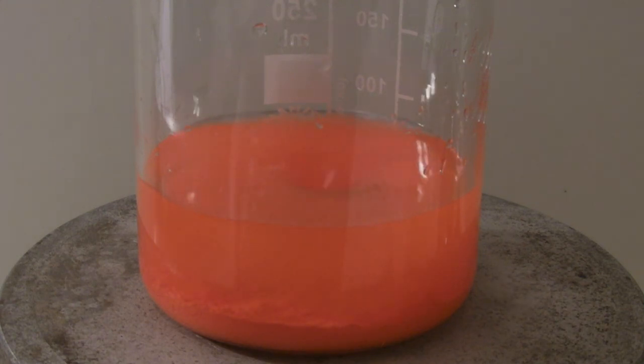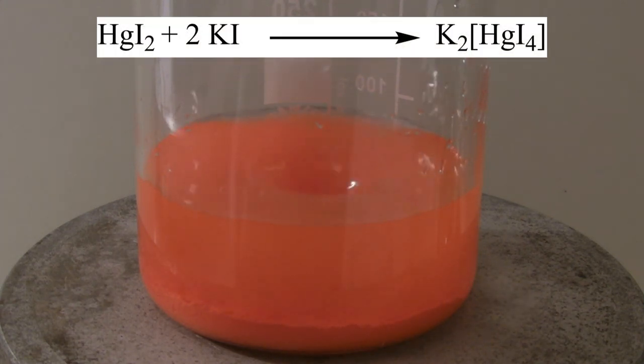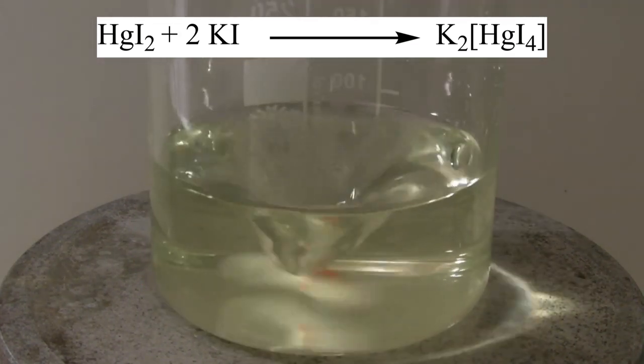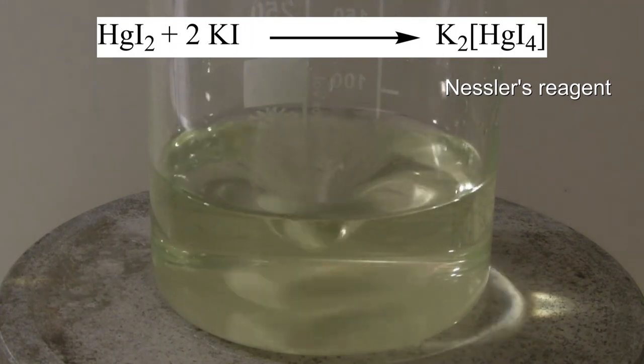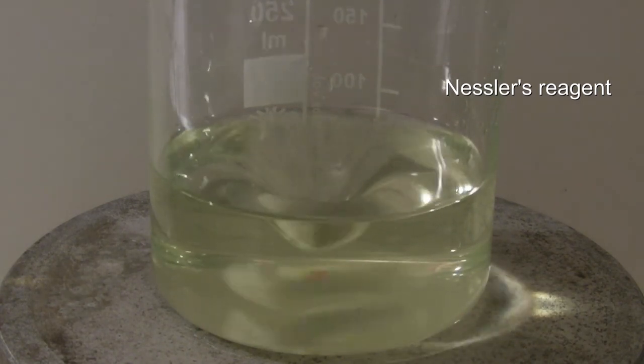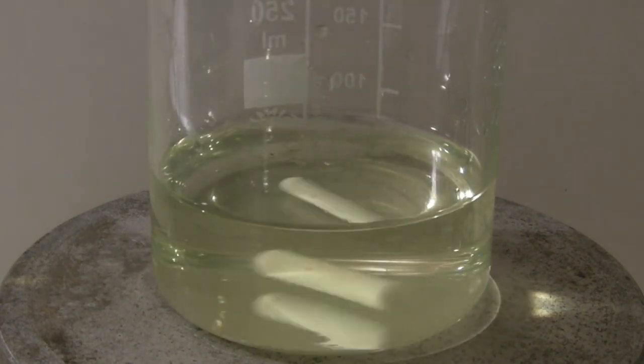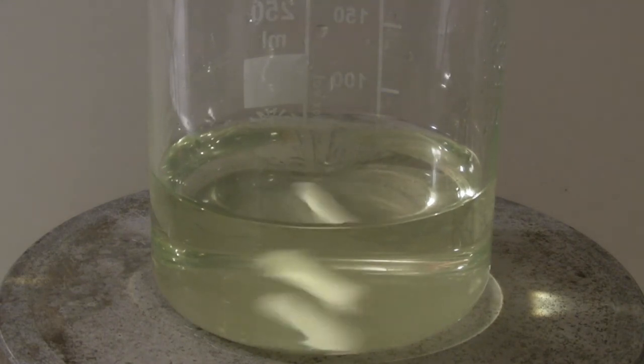Here the mercury iodide reacts with the potassium iodide to form potassium tetra-iodo-mercurate. This substance was used in the past in Nessler's reagent and helped to determine the presence and concentration of ammonia and amines in basic solution. Today less toxic alternatives are used.